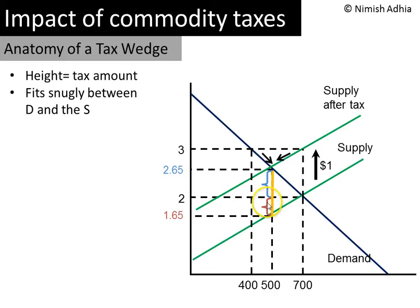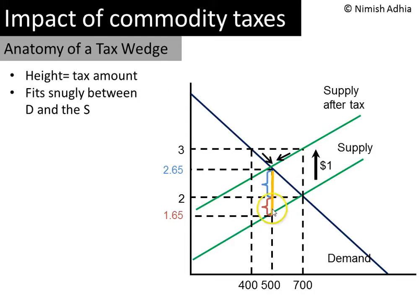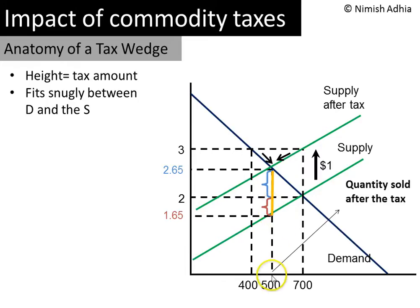Also notice that the tax wedge fits very snugly between the demand and supply curves to the left side of the equilibrium. So if you want to find the tax wedge, all you need to do is draw a line segment whose height is equal to the amount of the tax and that fits between the demand and supply curves. The position of the tax wedge on the x-axis tells you the quantity that is sold after the tax.